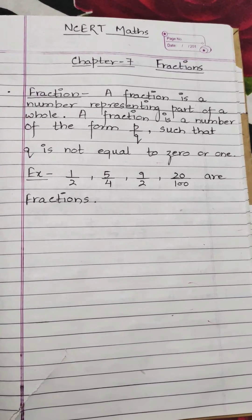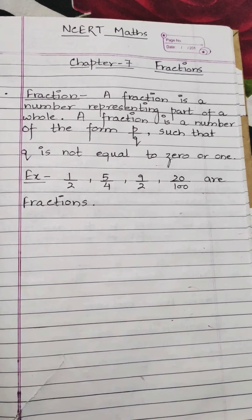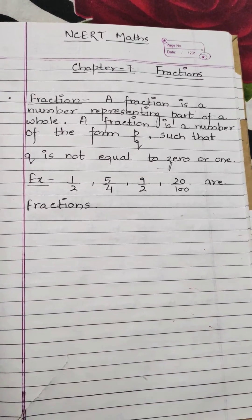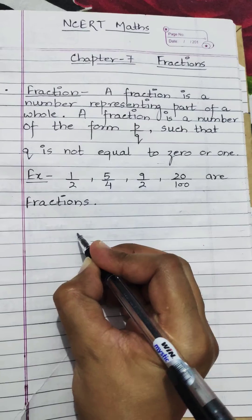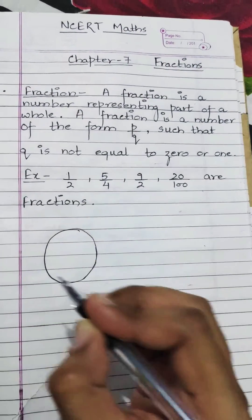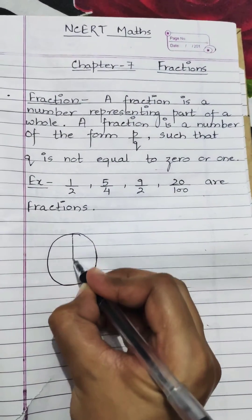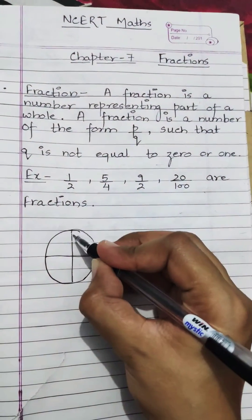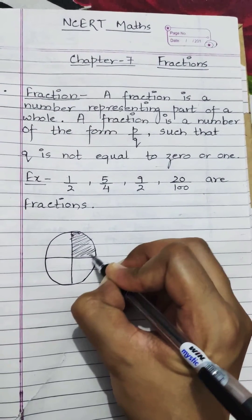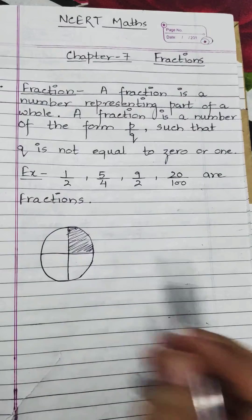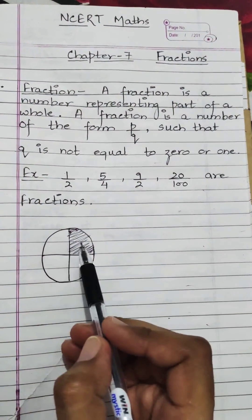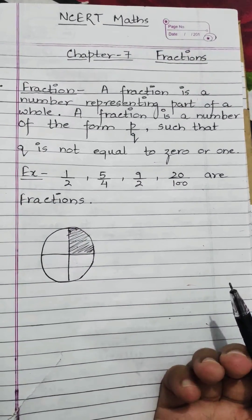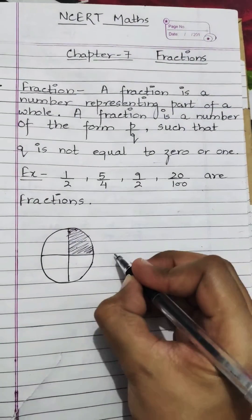Suppose if we divide one object into some parts, we can easily write its fraction. Suppose this is your circle — I have divided the circle into four parts, and one of those parts is shaded. So how can we write the fraction of this shaded part in fractional form?